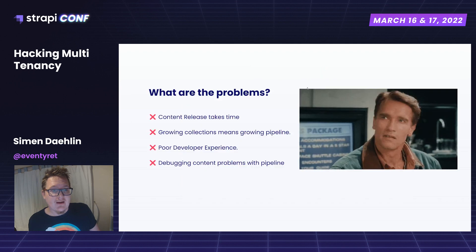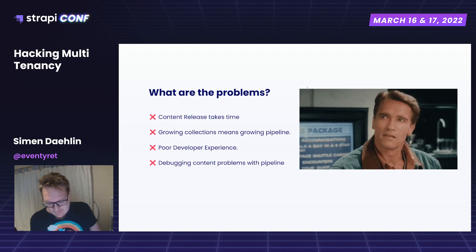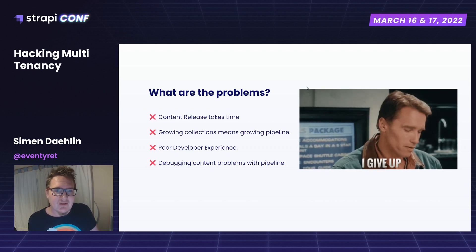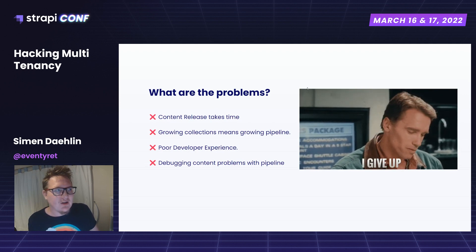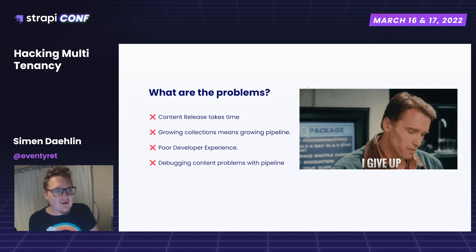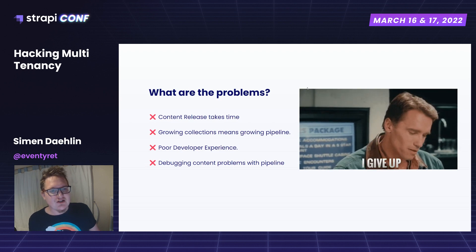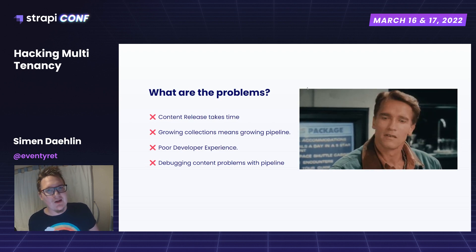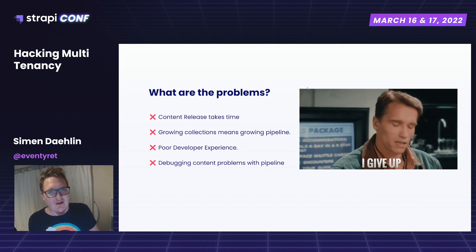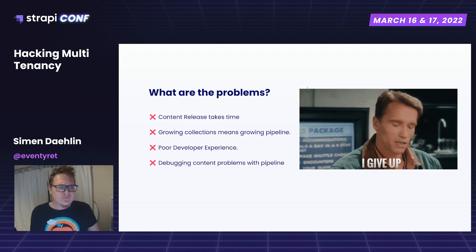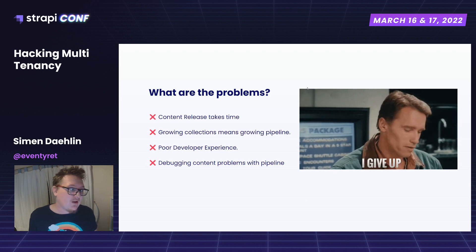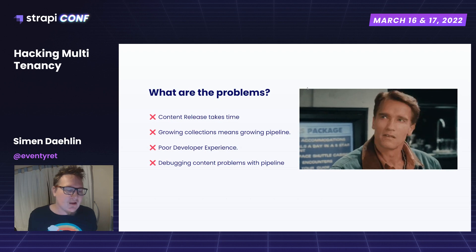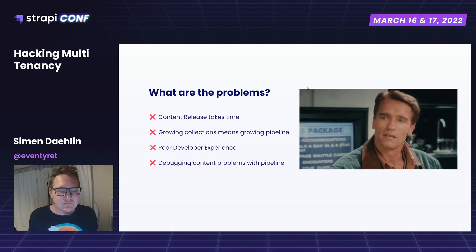I've only been at Virgin Media for about five months now. So here are the pain points I have as a developer. First, content releases take time — literally hours with caching and everything else. The more collections we add, the bigger the pipeline gets and the worse the experience gets. Our pipeline requires us to customize and duplicate data into a separate project, which means I have to maintain two projects. Somebody else adds a collection when I'm on holiday, and then we have to update the pipeline tools so all the data is copied correctly.